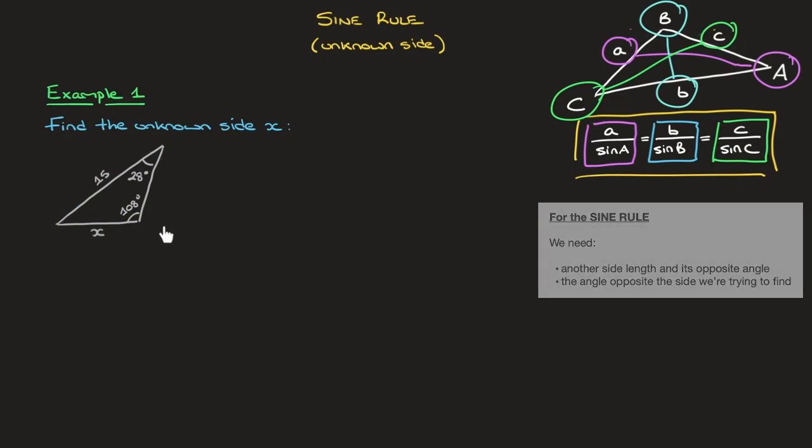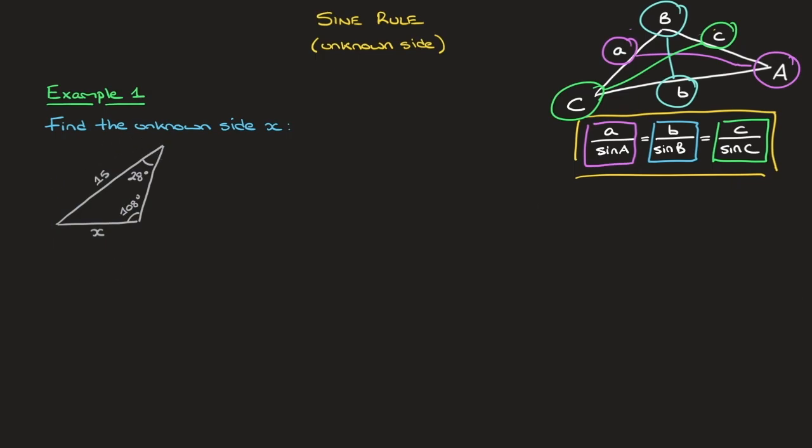And so let's see how that works with this first example. We need to find the unknown side length X. Well, looking at this triangle, we quickly notice that we have its opposite angle, that's 28, and we also notice that we have another pair of side length and its opposite angle.